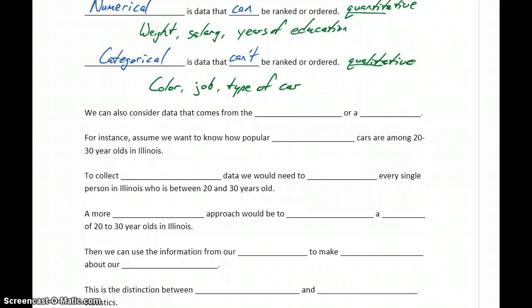We can consider numerical data, categorical data, depending on what variable we're trying to understand. We can also consider data that comes from the population or data that comes from a sample.